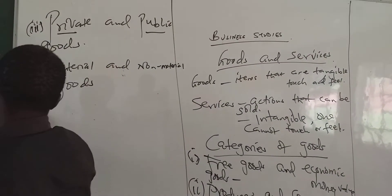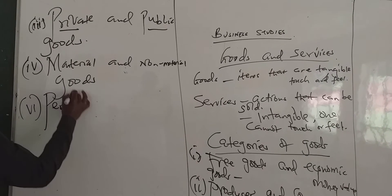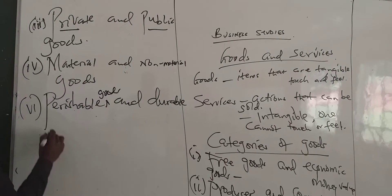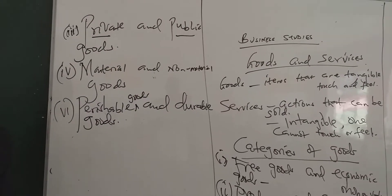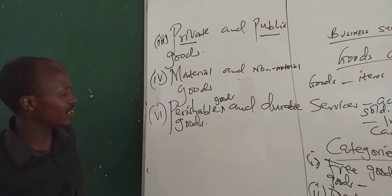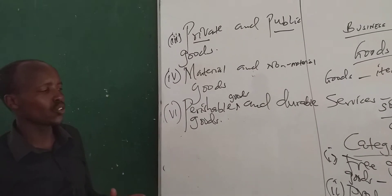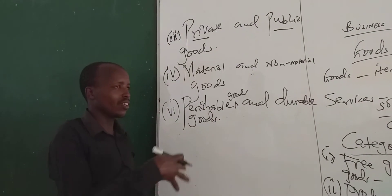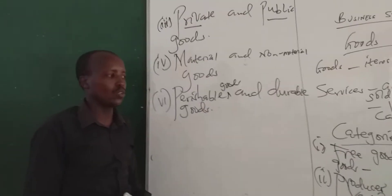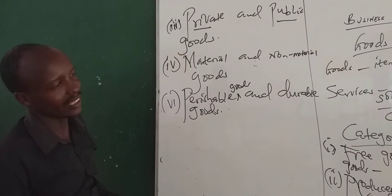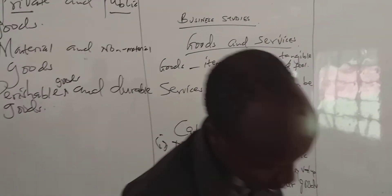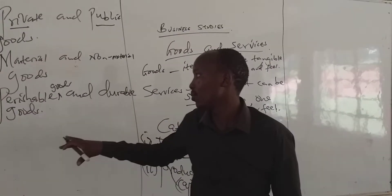We also have another category of goods: perishable and durable goods. Most of you know flowers — one feature of flowers is that they are perishable. Perishable goods are goods which can go bad easily unless stored under proper conditions. Durable goods, on the other hand, are goods which can last for a long time without going bad — like this whiteboard here, which has lasted a long time and does not look bad. It is a durable commodity.